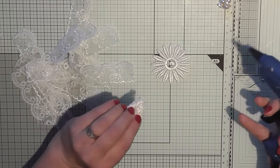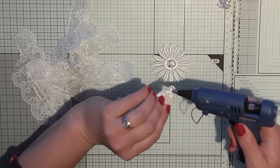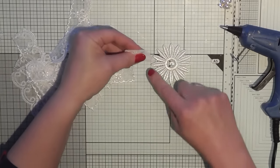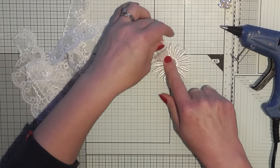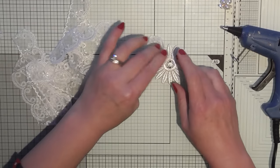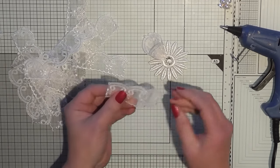I've got this little applique here that I'm using as my base. I'm going to start on the outside and do a row of these, then I'm going to do another row in the center.